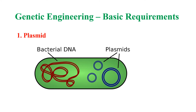Let us see more about plasmids. Plasmid is present inside the bacterial cell. As shown in this figure, plasmid is the small circular double-stranded DNA molecule found in the cytoplasm of a bacterial cell, and it is separated from chromosomal DNA.